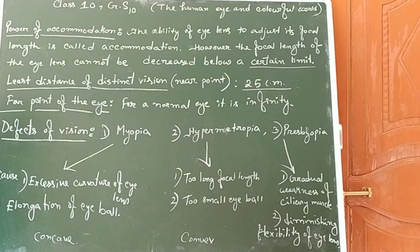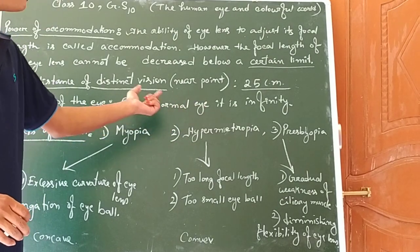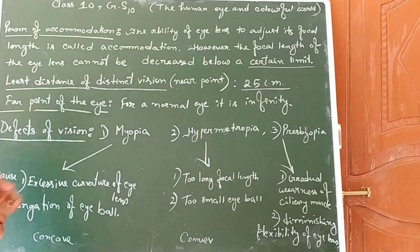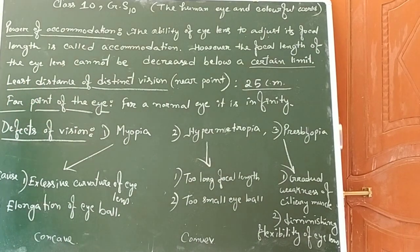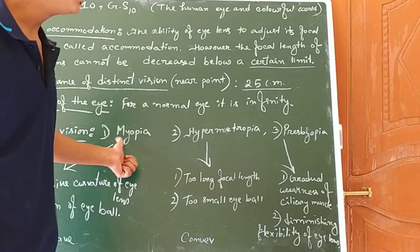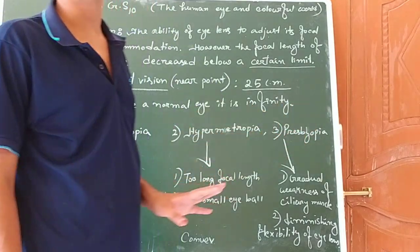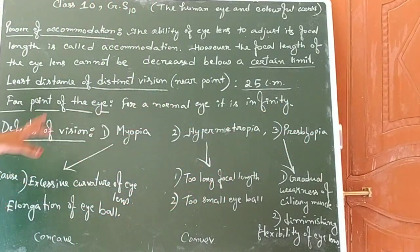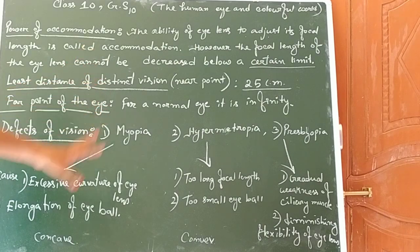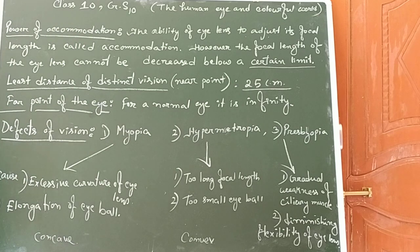Regarding the normal eye, some eyes are not normal — some defects also exist. There are three types of defects of vision in the human eye. The first one is myopia, the second one is hypermetropia, and the third one is presbyopia. This is very important — the three types of defects of vision.